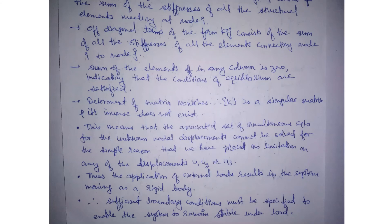The determinant of the matrix vanishes when we compute this matrix determinant because this is a singular matrix which has no determinant and we can't compute its inverse. This means that the associated set of simultaneous equations for the unknown nodal displacements cannot be solved for the simple reason that we have placed no limitation on any of the displacements U1, U2, or U3. We have no limitations on displacement.